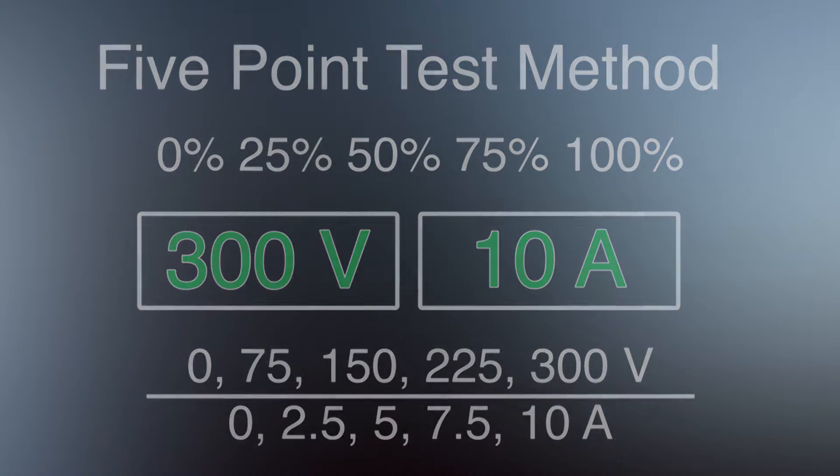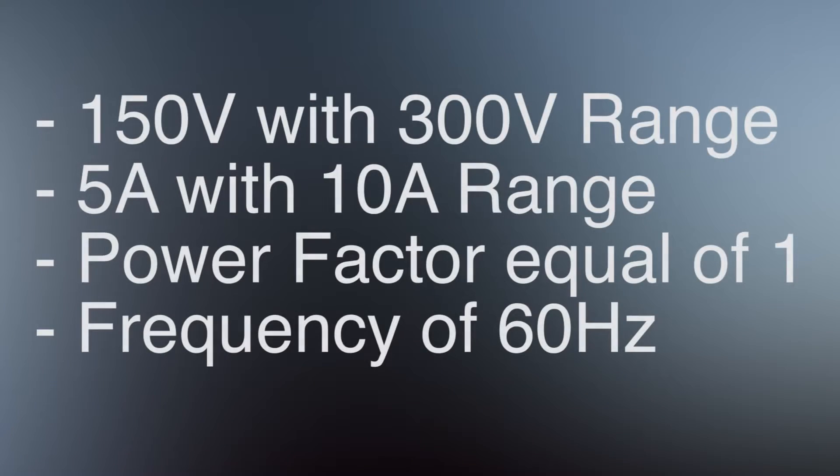For this analysis we will use a voltage of 150 volts to 300 volt range and a current of 5 amps with a 10 amp range, a power factor equal to 1, and a frequency of 60 Hertz. These values were chosen to be 50% values of the five point method and are just chosen to demonstrate one point of the five point method for accuracy testing. Only one point is chosen for the sake of time during this video.